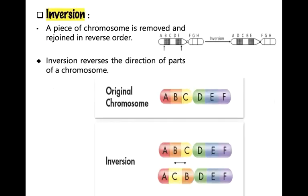In inversion, the fragment that got cut off from one chromosome is able to reattach to it but in reverse orientation — that is the keyword: reverse orientation. For example, a chromosome with gene order A B C D E F G H is broken between B and C, and the center portion is turned around 180 degrees, resulting in the gene order A D C B E F G H.